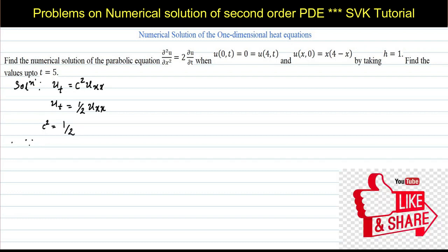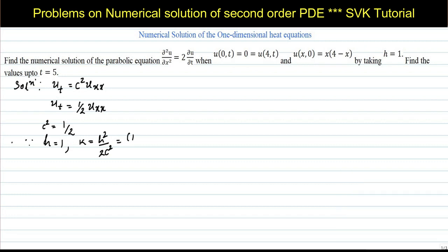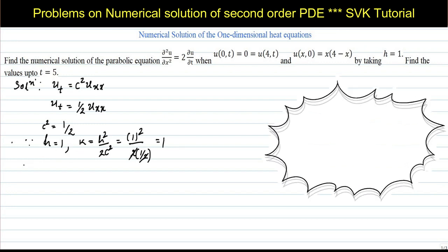Since h = 1 is given, we find k using the formula k = h²/(2c²). Substituting h = 1 and c² = 1/2: k = 1² / (2 × 1/2) = 1/1 = 1. So the value of k is 1.